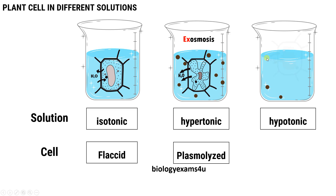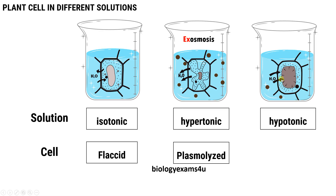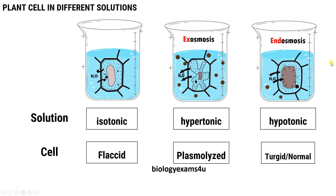Now the third environment — the cell is placed in a hypotonic solution. As the concentration of the outside solution is less, water enters into the cell and is stored in the vacuole, since plant cells have a large vacuole. Turgor pressure inside the cell increases, making the cell turgid. The plasma membrane can expand only to the limit of the cell wall, so the plant cell won't lyse or burst because of this rigid cell wall. The cell remains turgid and normal. This is due to endosmosis — the entry of water into the cell from the outside hypotonic solution.